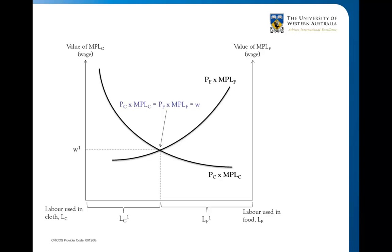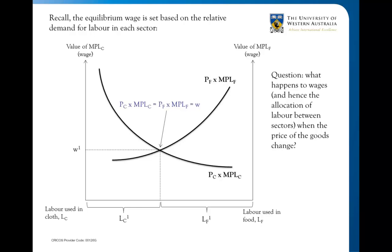This first diagram is the one from the previous video, where we looked at the equilibrium wage given the marginal product of labour in the cloth sector and the food sector. That in turn determined how much labour was used in cloth and how much was used in food. The question now is: what happens to wages and the allocation of labour between the sectors when the price of goods changes?